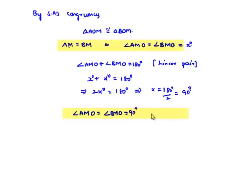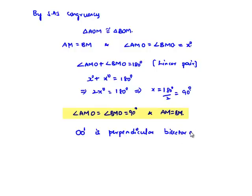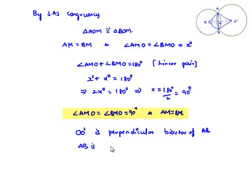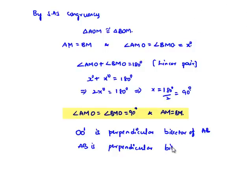We also got that AM is equal to BM. Therefore, OO' is the perpendicular bisector of AB. And the relation is mutual, so we can also say that AB is the perpendicular bisector of OO'. This is the required proof. Thank you.